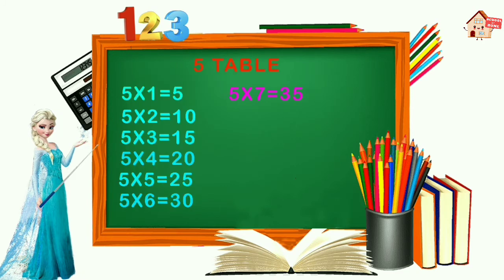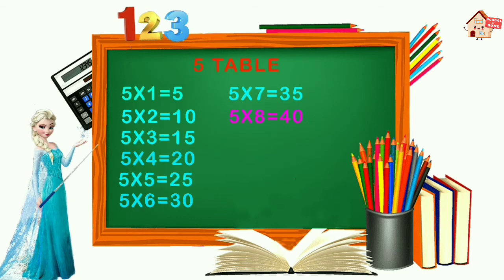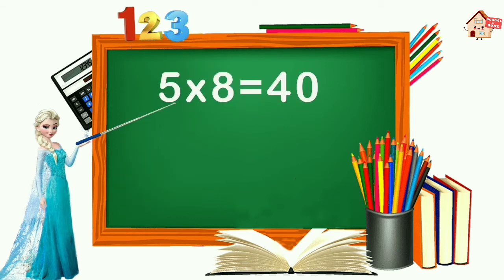5 times 7 equals 35, 5 times 8 equals 40.